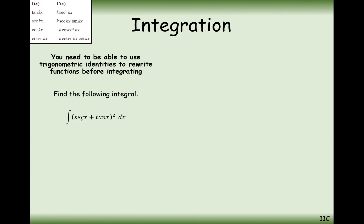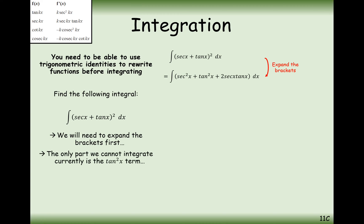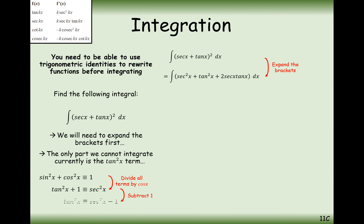Another one is (sec x + tan x) all squared. Let's expand the brackets to see what we've got. The only part we cannot integrate directly is tan squared. We can do sec squared — that's an anti-derivative in our formula booklet — and sec tan is a derivative in our formula booklet as well. So we're going to need to turn tan squared into sec squared minus 1, just like in the first example.